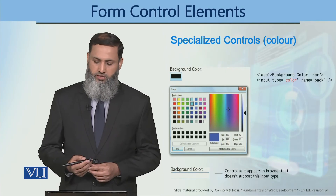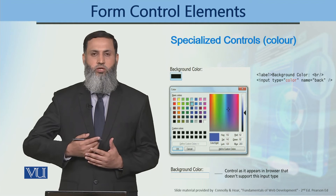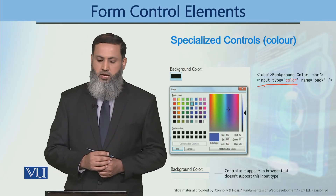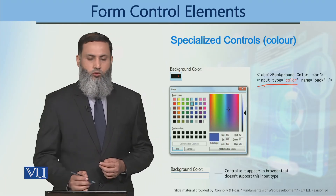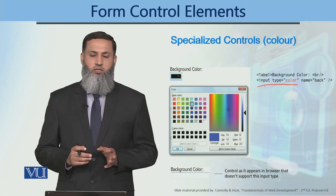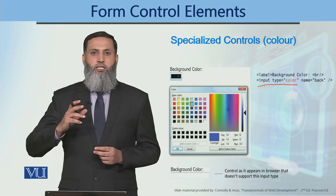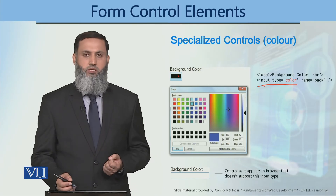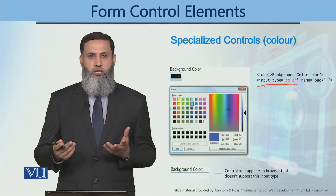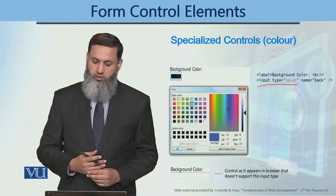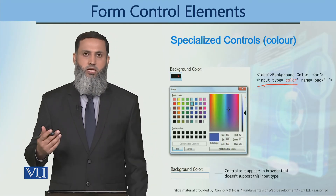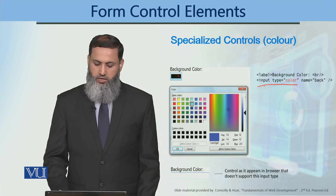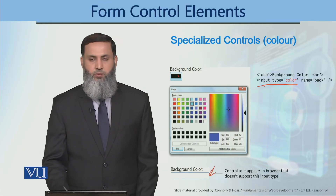In HTML5, you have color controls which allow the user to provide a color as input. You use input type equal to color. When the user clicks the control, a color dialog box will open. The appearance of this dialog box varies across different operating systems — on Windows you will see one style, on Linux you will see a different color dialog box. All these dialog boxes allow the user to select a color as input. If the control is not supported in the browser, you will see a text field instead.